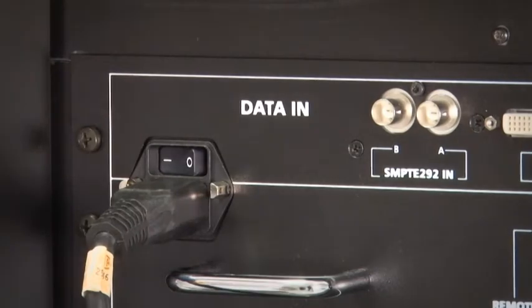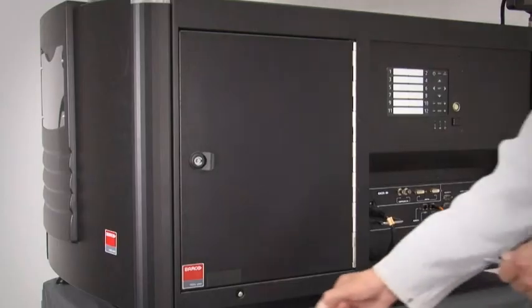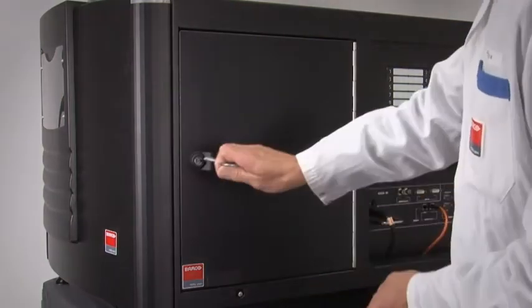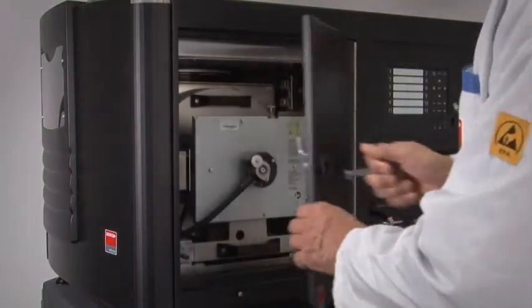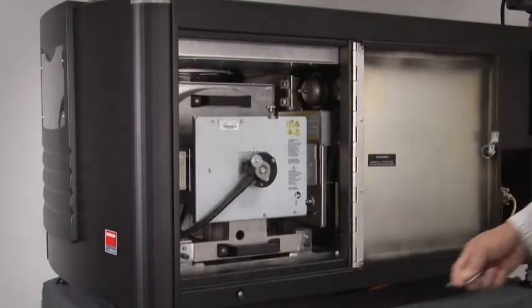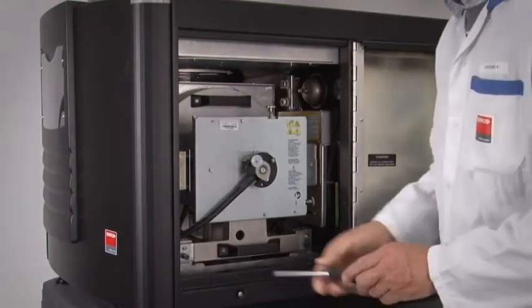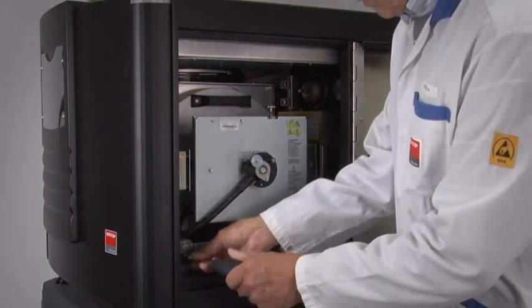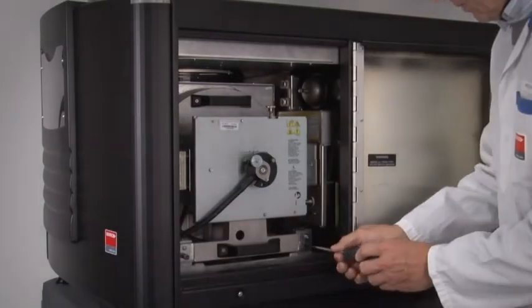Turn off the main electrical breaker to the projector. Open the door covering the lamp house compartment. Loosen all two spring loaded captive bolts that lock the lamp house to the projector.